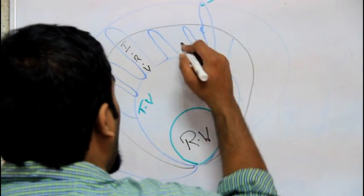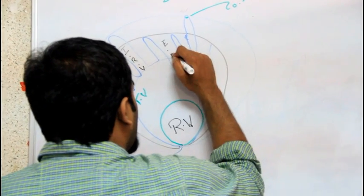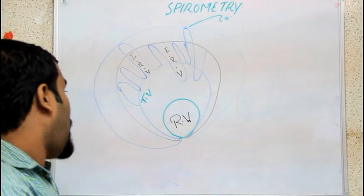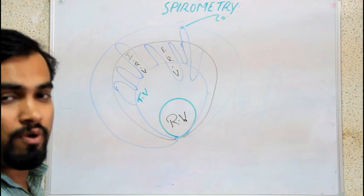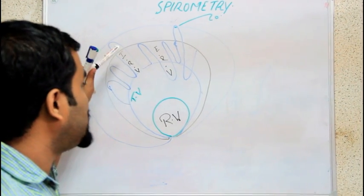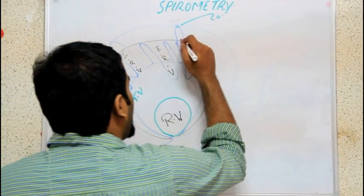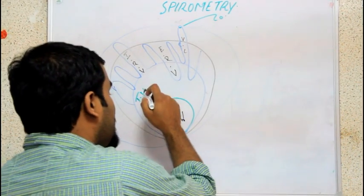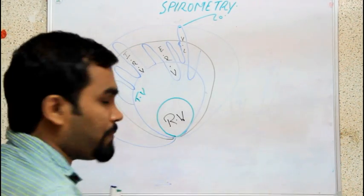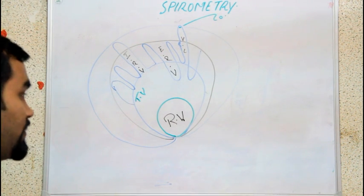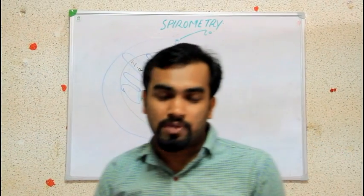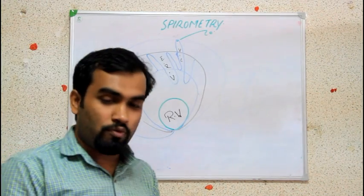ERV — expiratory reserve volume — is forceful expiration after normal expiration: 1100 to 1300 ml. Remember, expiratory reserve volume is always less than inspiratory reserve volume. Vital capacity is the sum of TV plus IRV plus ERV, and from this we can find all other capacities. Please watch my videos, subscribe, and support me — thank you for watching.